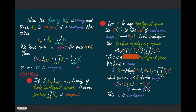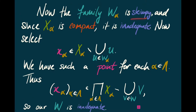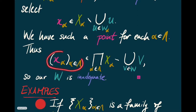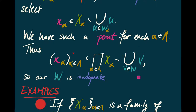W-alpha is certainly going to be skimpy. But each X-alpha by assumption is compact, so W-alpha is therefore inadequate — W-alpha fails to cover X-alpha. So I can choose a point x-alpha that is not in the union of the elements of W-alpha but is nevertheless in X-alpha. I can do that for every single alpha in lambda. That gives me a point of the product over alpha in lambda of X-alpha, and no coordinate of this point is covered by the corresponding W-alpha. That means this element of the product is not covered by the elements of W — in other words, our W is inadequate.